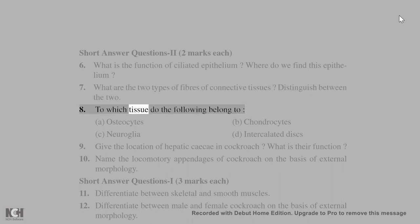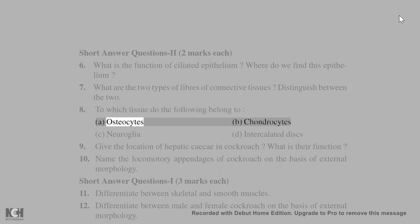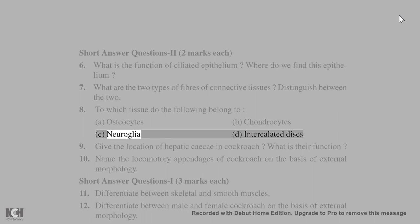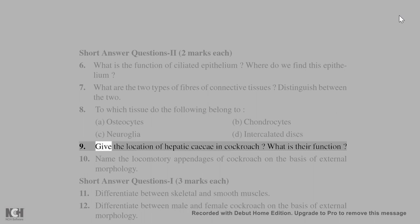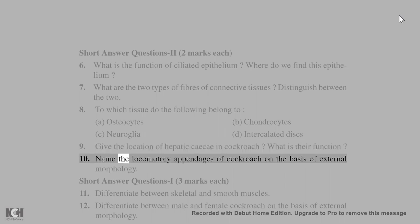8. To which tissue do the following belong? A. Osteocytes. B. Chondrocytes. C. Neuroglia. D. Intercalated discs. 9. Give the location of hepatic caeca in cockroach. What is their function? 10. Name the locomotory appendages of cockroach on the basis of external morphology.